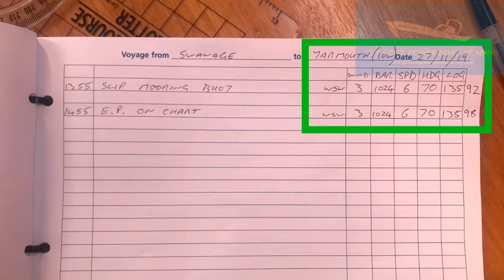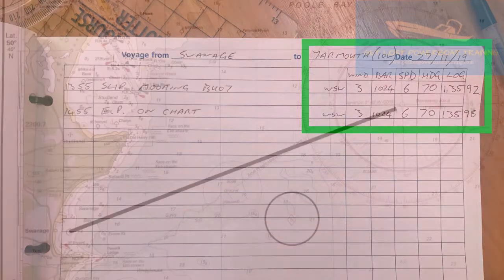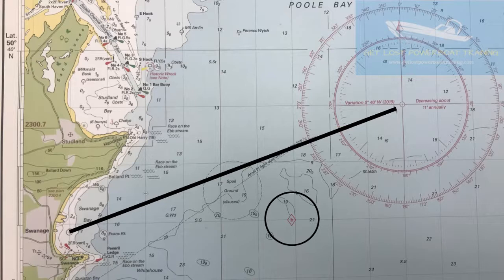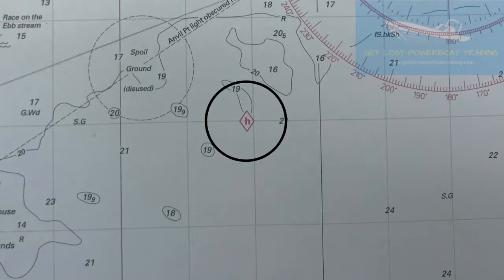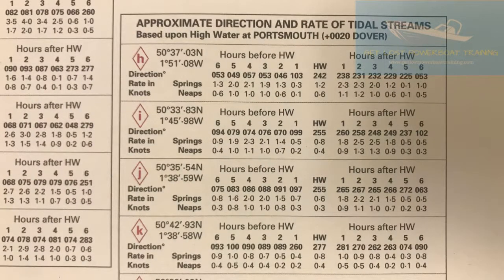The only thing we really need to account for is the tide. If we take a look at this symbol below our water track and zoom in, we can see that it's a tidal diamond — tidal diamond H. Tidal diamond H refers to a table in which there are details of the set and drift of the current; that's the speed and direction of the current that we can look up and use to plot what happened.